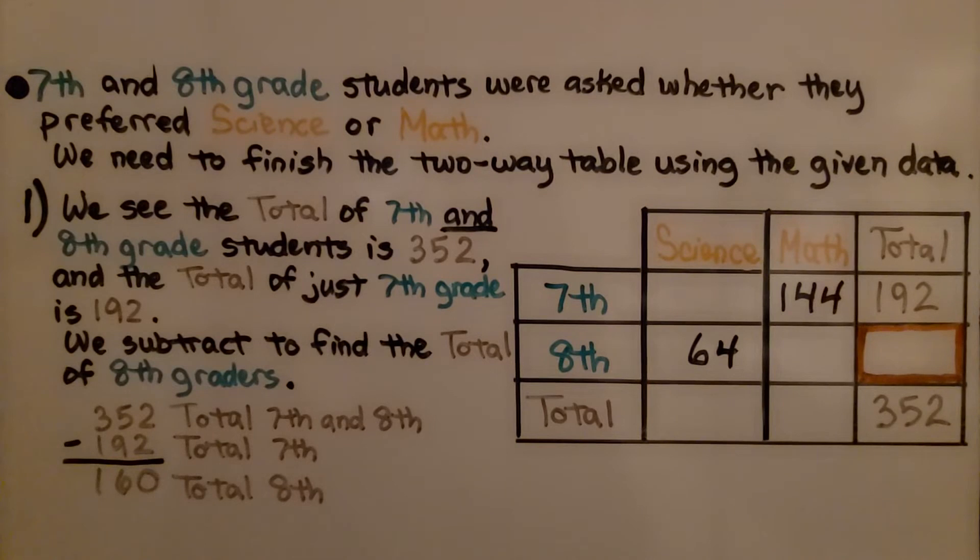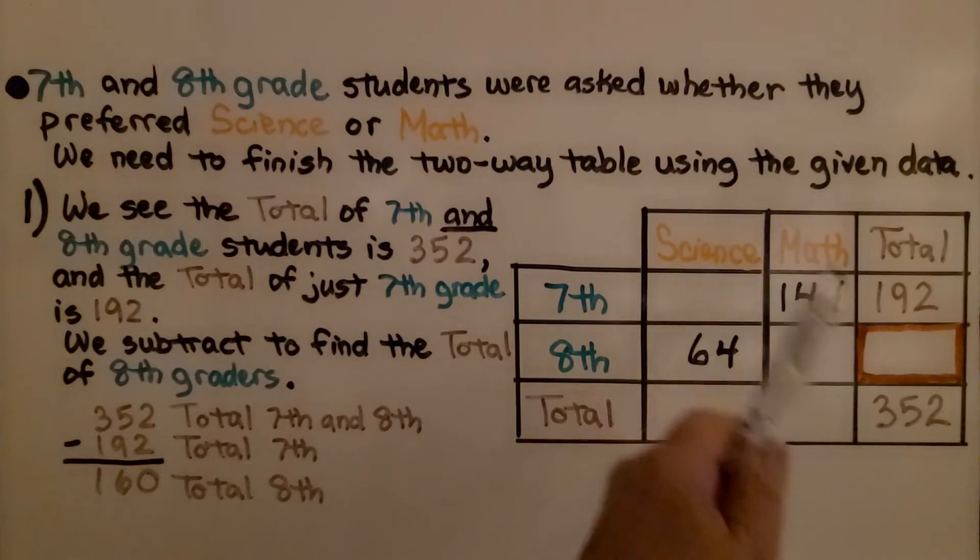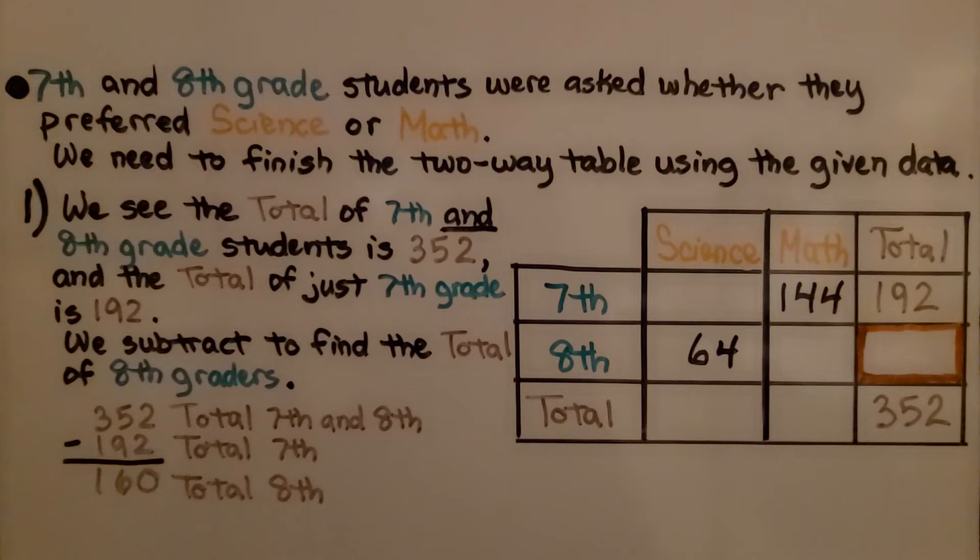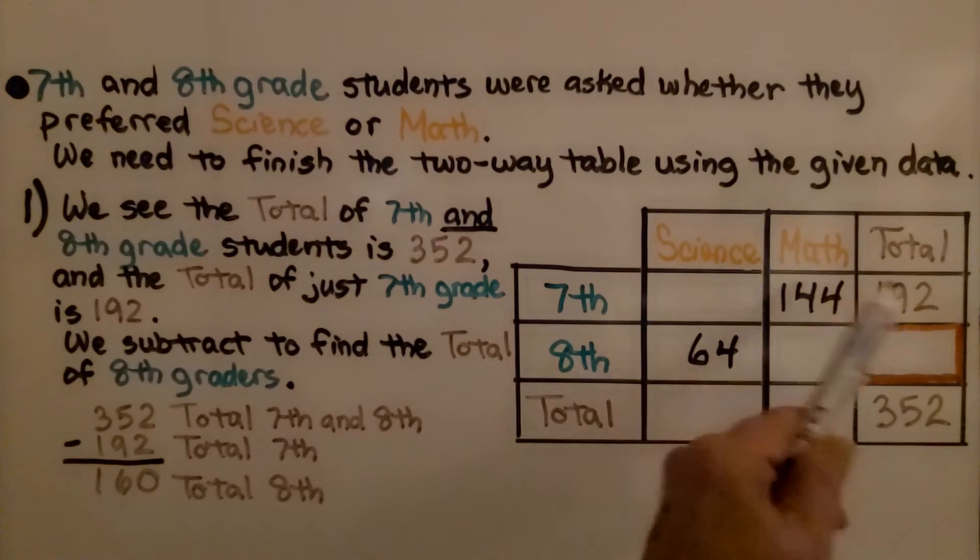So here's the problem we're going to be working on. It says, 7th and 8th grade students were asked whether they preferred science or math. We need to finish the two-way table using the given data. So there's data already given here.